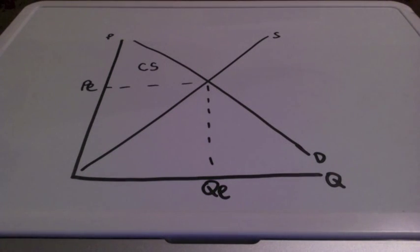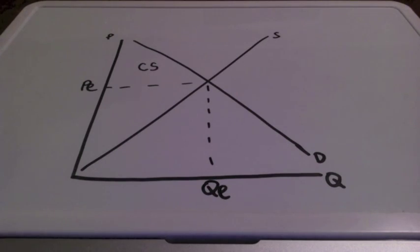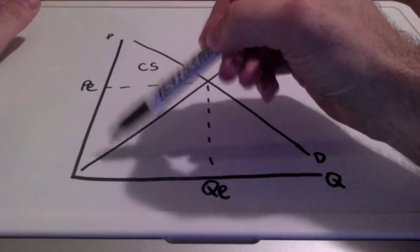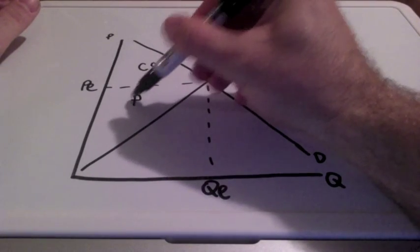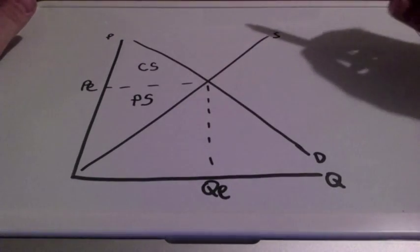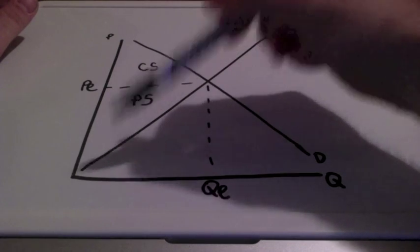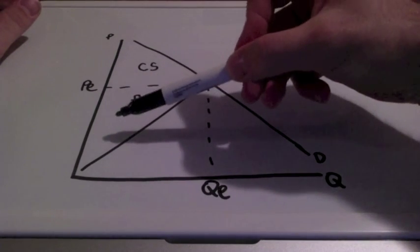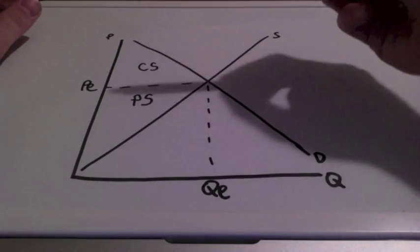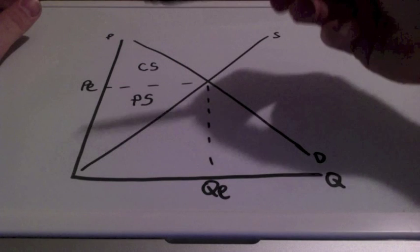Producer surplus is the amount that producers benefit by selling at a market price that is higher than the least they would be willing to sell for. From the equilibrium price all the way down to our supply curve represents producer surplus. Remember, our supply curve deals with those that supply, meaning those that produce, while our demand curve deals with those that consume — those that demand goods and services.